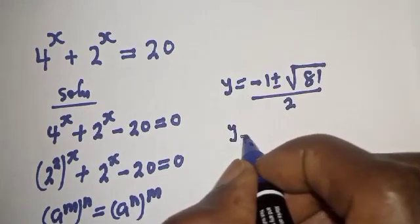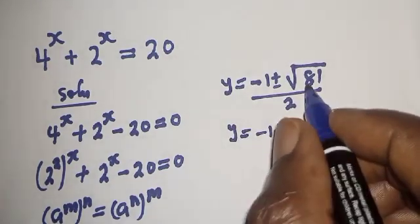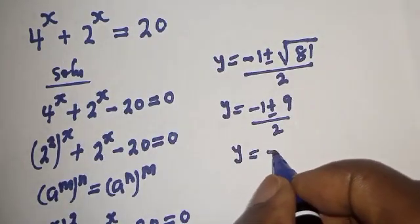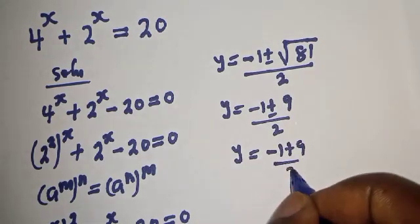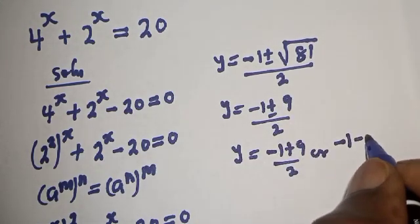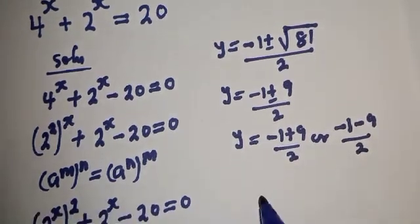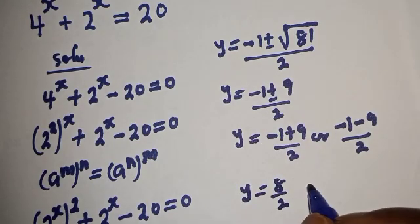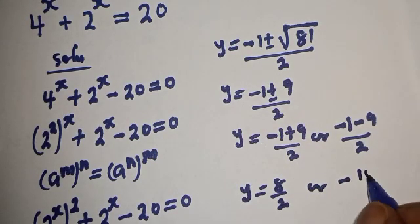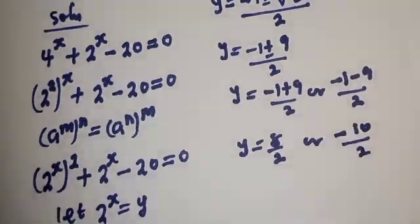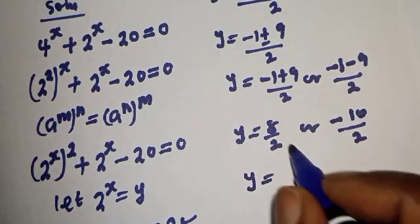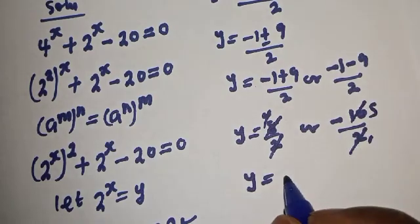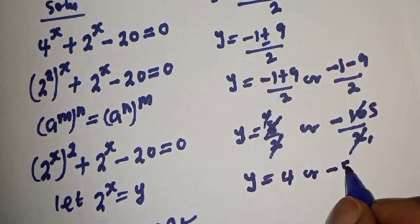y will be equal to minus 1 plus or minus square root of 1 plus 80, that is 81, over 2. y is equal to minus 1 plus or minus square root of 81, which is 9, over 2. So y is equal to minus 1 plus 9 over 2, or minus 1 minus 9 over 2. This gives y equal to 8 over 2 or minus 10 over 2, which simplifies to y equal to 4 or minus 5.